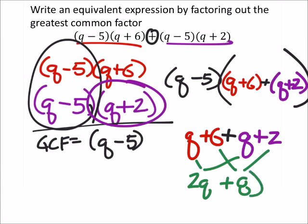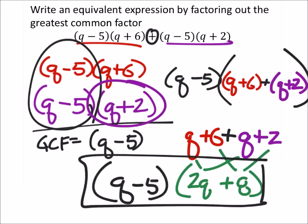So this would be the new set of parentheses. Our final answer should be q minus five times 2q plus eight.